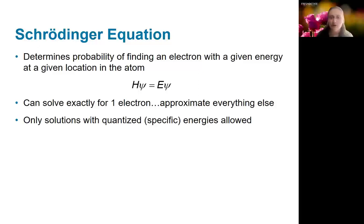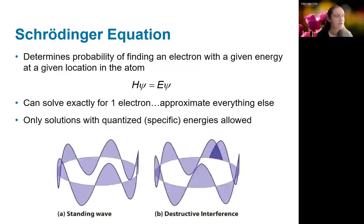This is the simple form where I haven't written out any details. We're not going to go into the details in this class, but essentially what you should know is that you can solve this equation exactly for one particle. For anything more than one particle, we're going to have to make approximations. Based on the parameters and requirements of this equation, we find that only solutions that have specific energies are allowed. So only quantized solutions are allowed.